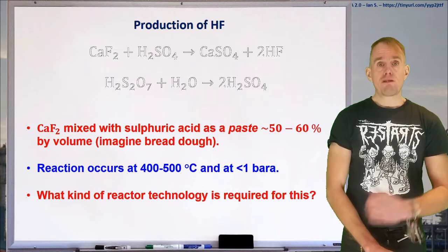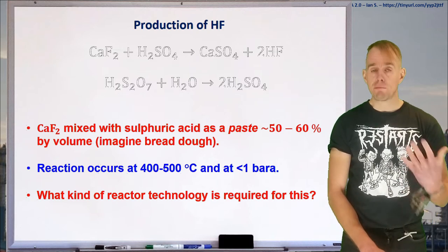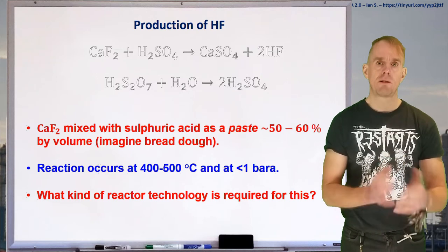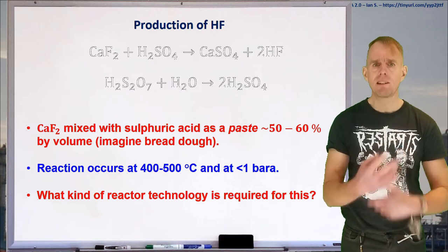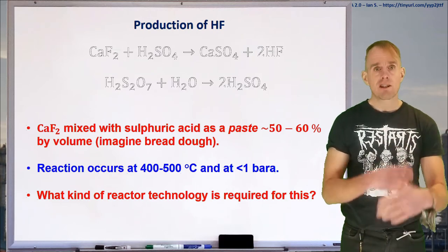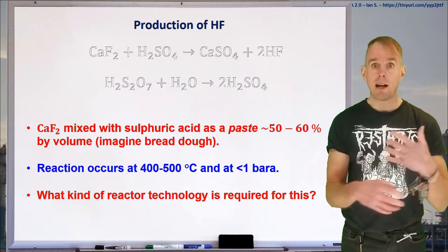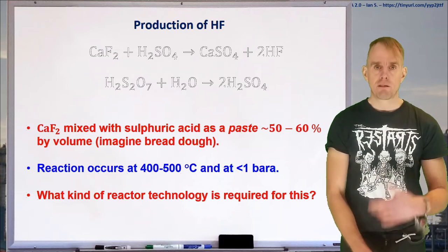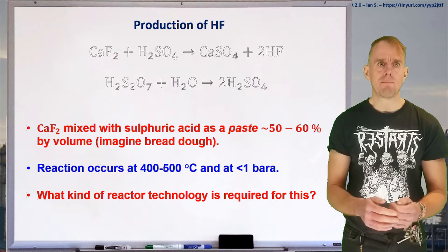Hydrogen fluoride is produced by taking calcium fluoride, which is a mineral called fluorospar, by grinding that up into a powder that's just a little bit coarser than flour, and then by mixing it incredibly thoroughly with sulfuric acid. The reaction doesn't take place at room temperature, so that initial mixing process can happen at fairly cold conditions — room temperature, ambient. Considering this plant was on Merseyside, ambient was pretty chilly most of the time.